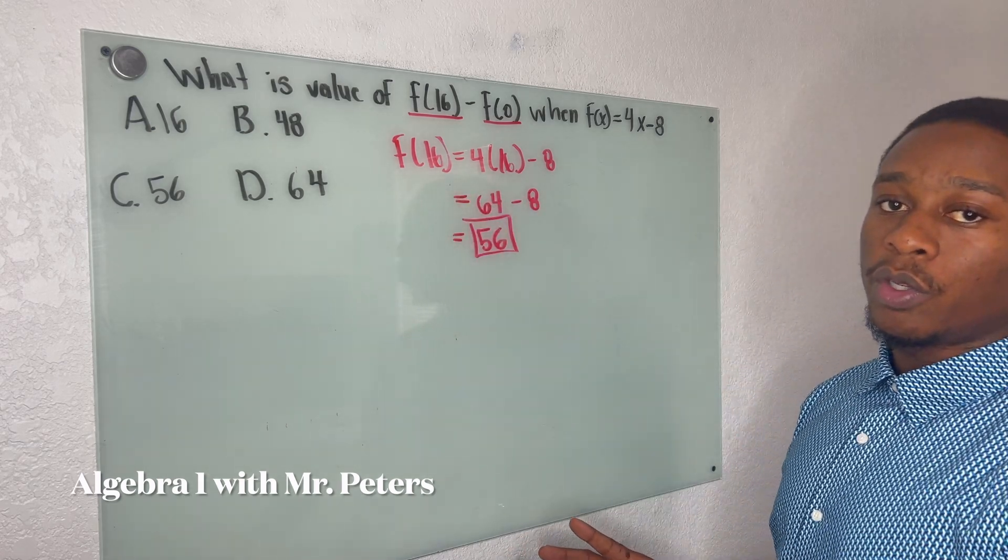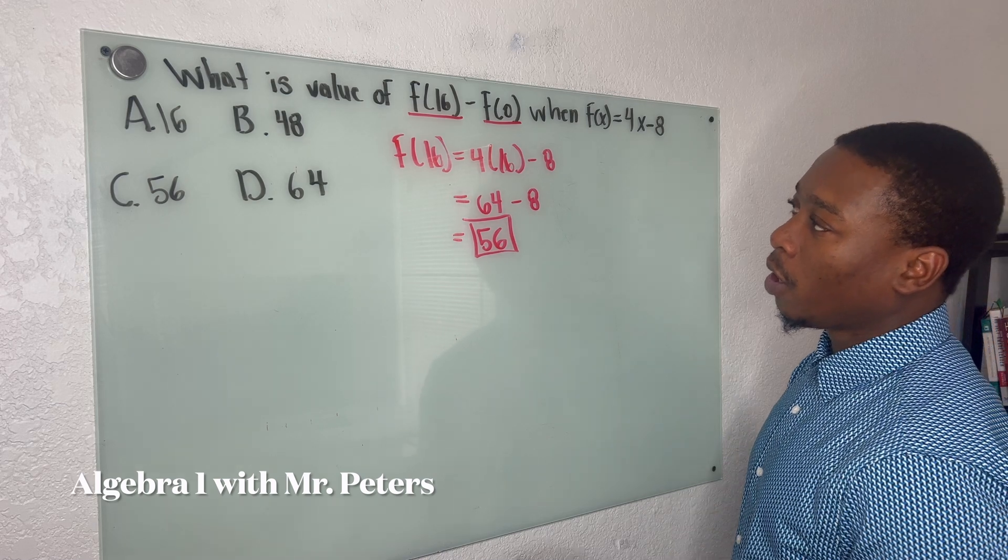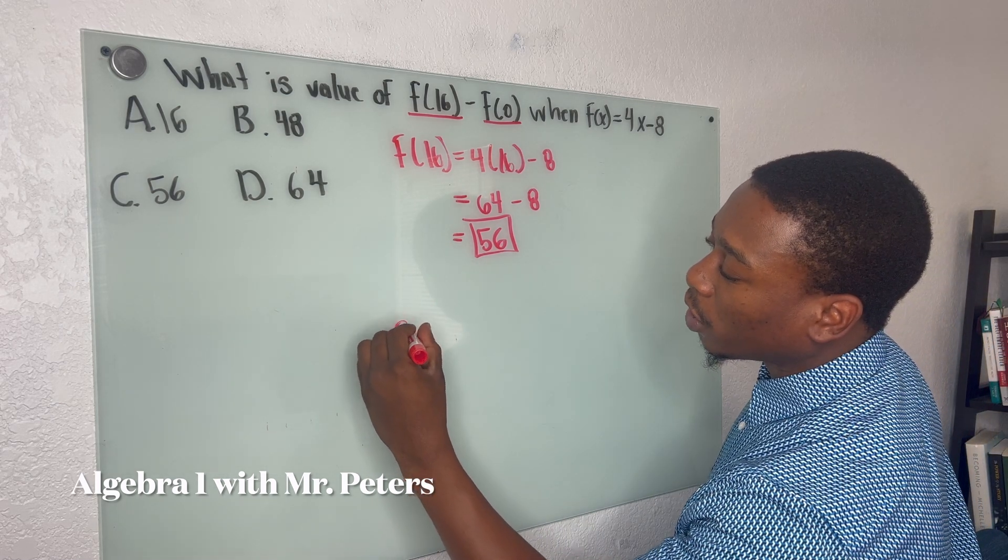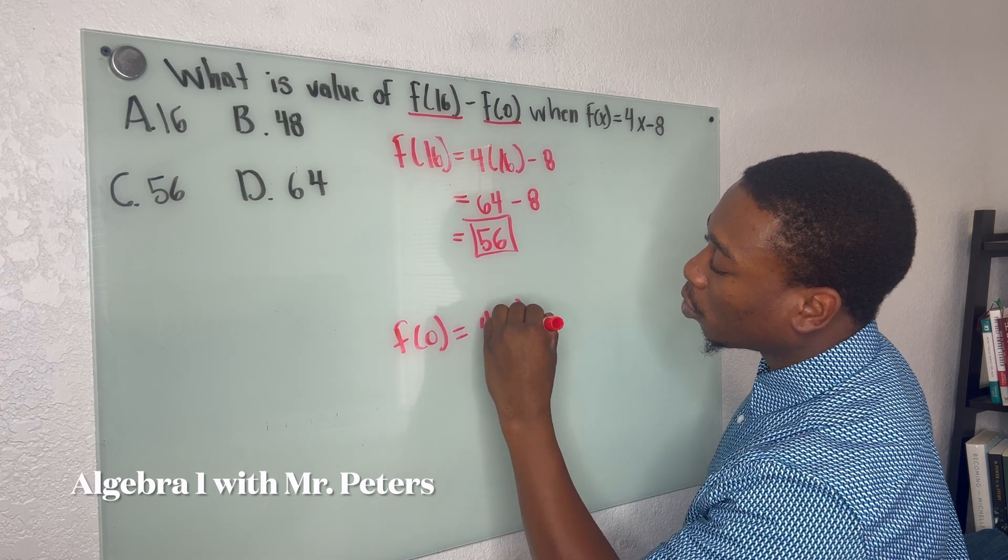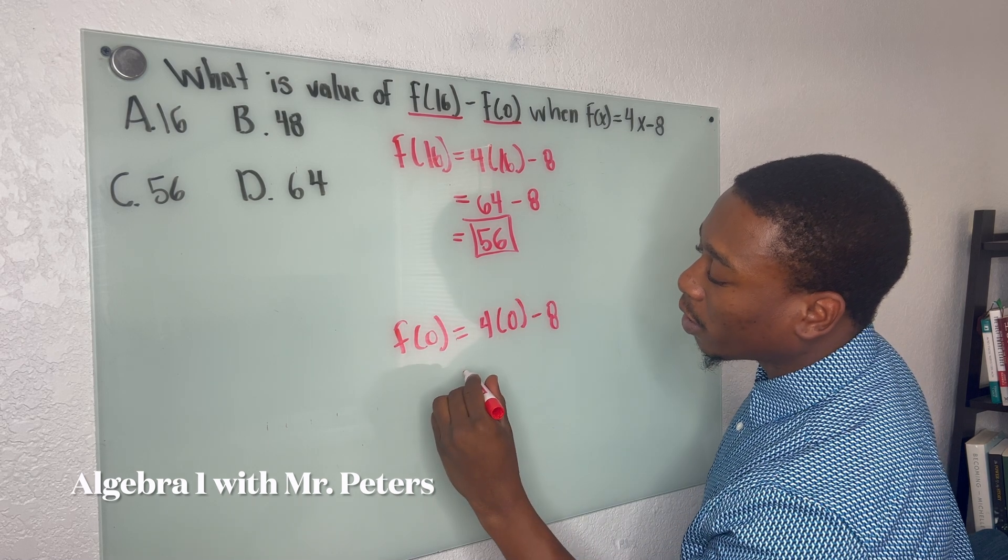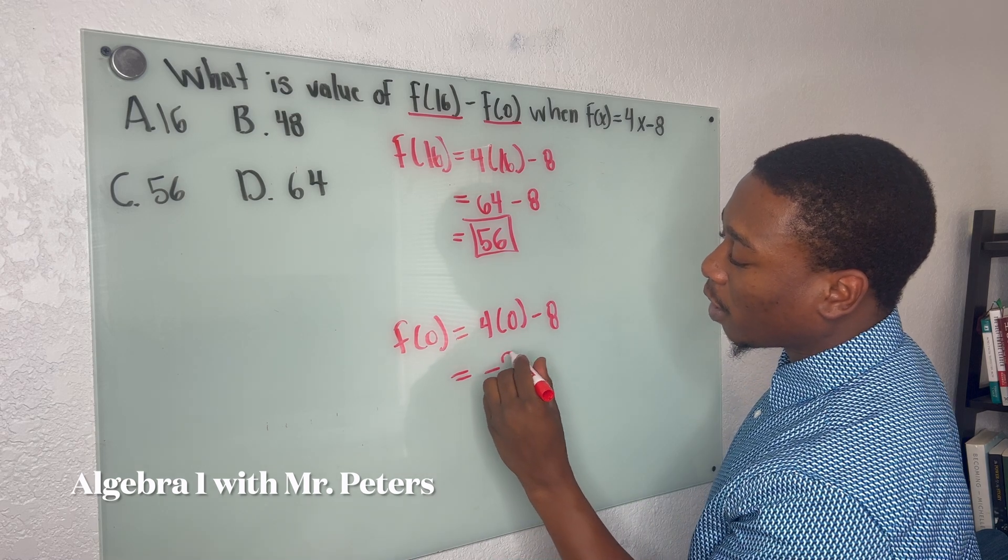So that's f(16). Now we're going to go ahead and do the same thing for f(0). So now I substitute 0 in for x, and once I do, I know that my answer is negative 8.